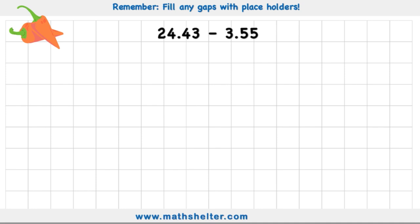So again, I'm going to start by putting my column titles. Ones, tens. In this case, I just need tenths and one-hundredths. And I'm ready to start populating my columns. 24.43, two tens, four ones, point four-tenths, three-hundredths. And then 3.55, three ones, point five, five.